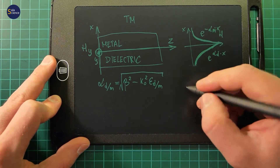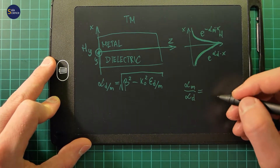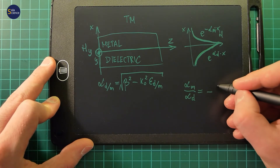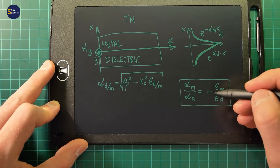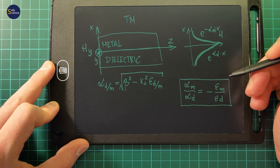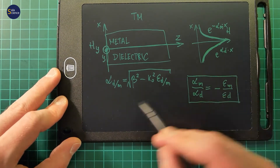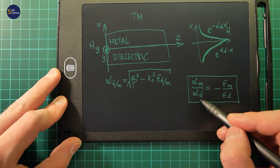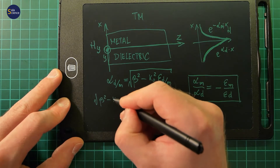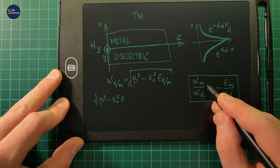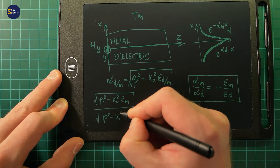It appears that alpha_m over alpha_d must be equal to minus epsilon_m over epsilon_d. You can prove this starting from Maxwell's equation on the curl of the magnetic field. Now let's substitute alpha_m and alpha_d with their expressions. So we have the square root of beta squared minus k-naught squared times epsilon_m, over the square root of beta squared minus k-naught squared times epsilon_d.